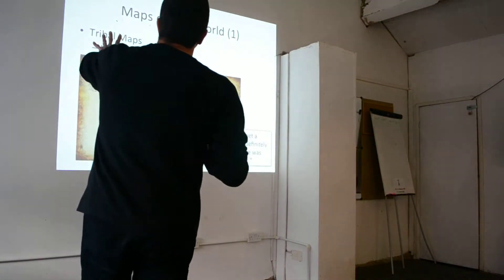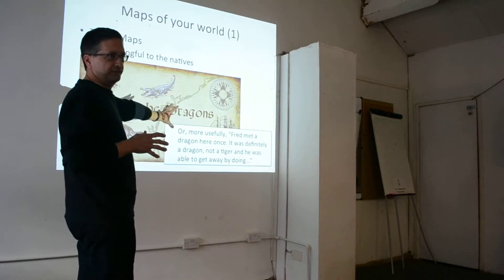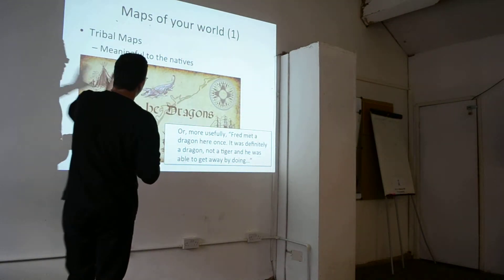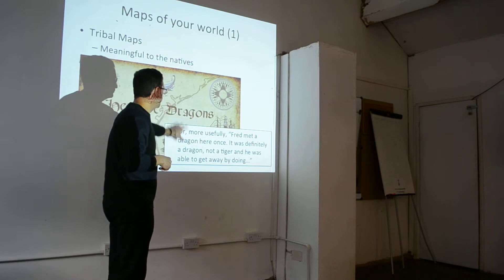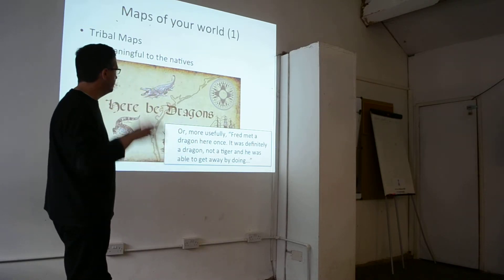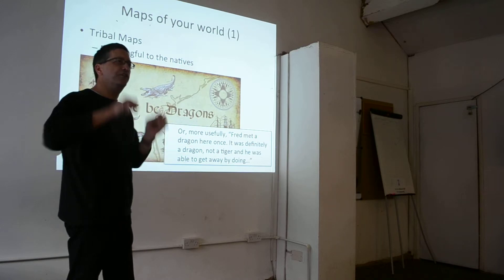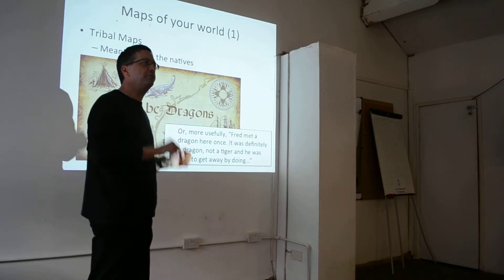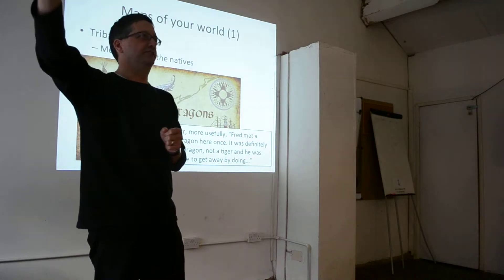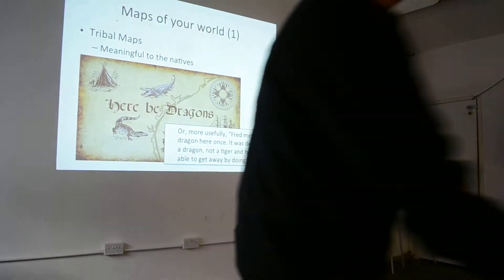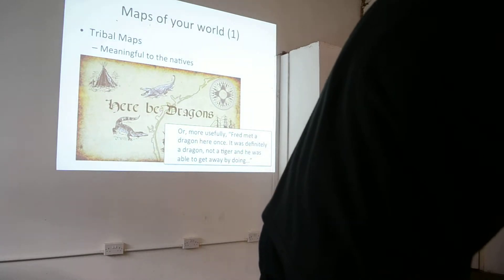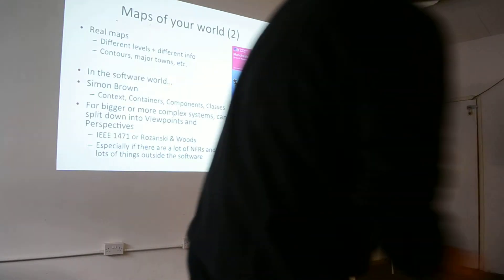What sort of maps? Tribal maps, which will be meaningful to the natives — the people who are actually going to use them. 'Here be dragons' is not particularly useful, but if you can say more usefully, 'Fred met a dragon here once, it was definitely a dragon, not a tiger, and the way he got away from it was this' — that's far more useful. It's good to know why there are areas of code that people have never wanted to go into.